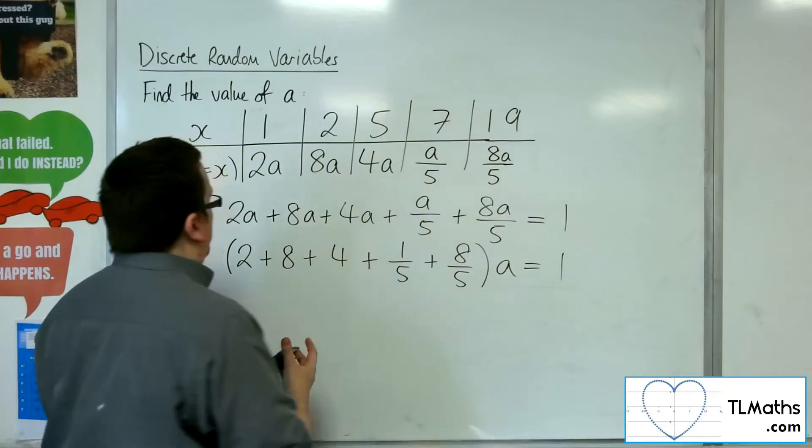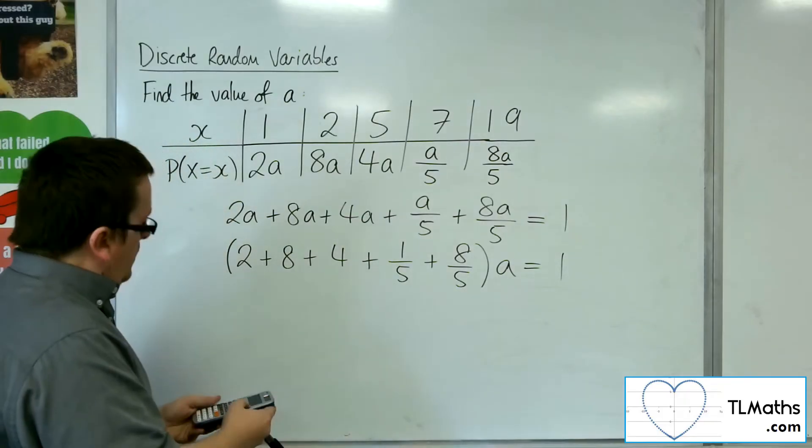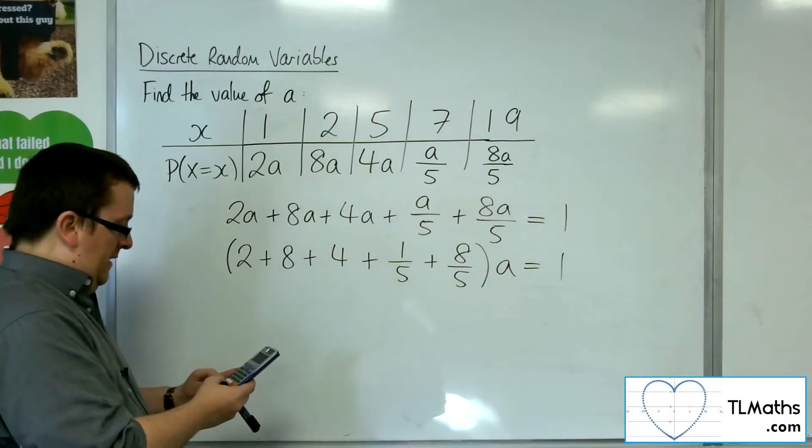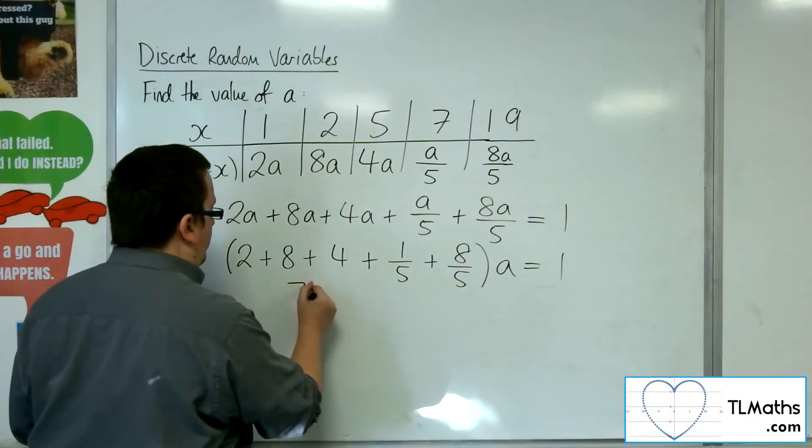OK, so we've got the 2 plus 8 plus 4 plus a fifth plus 8 fifths. And that gets me 79 fifths.